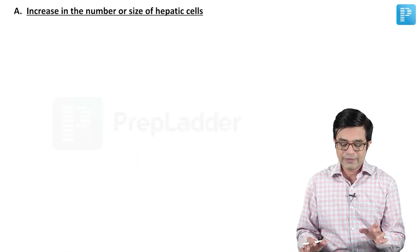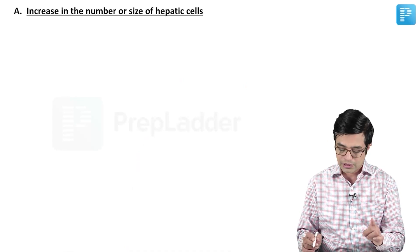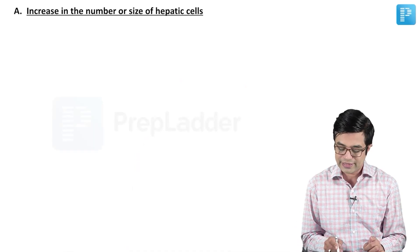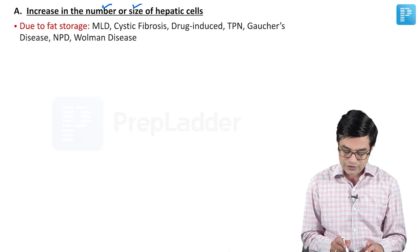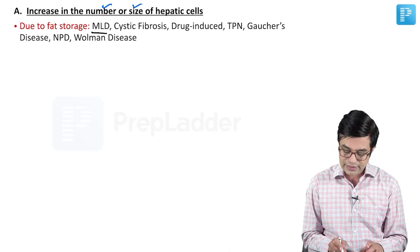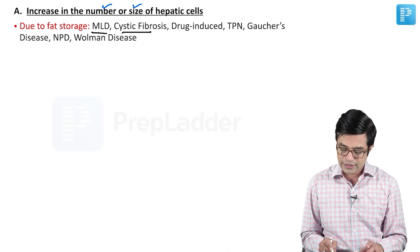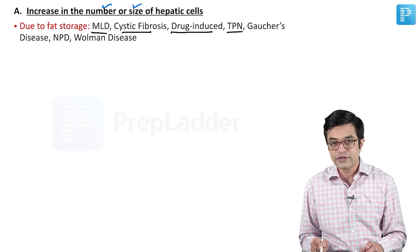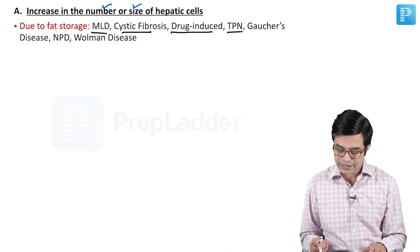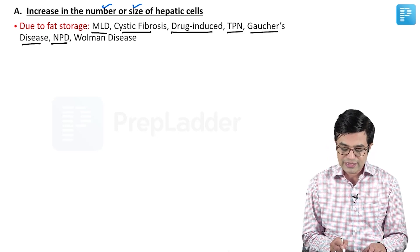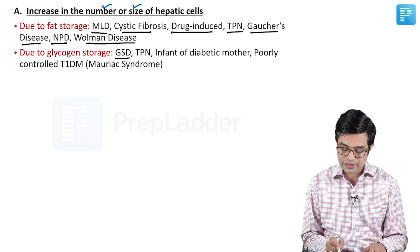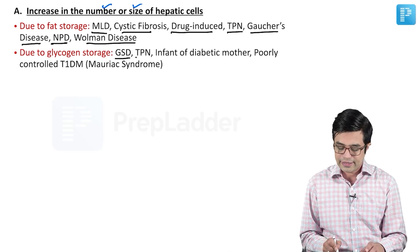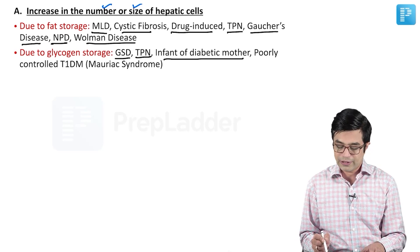First, hepatomegaly can occur due to an increase in the number or size of hepatic cells. It can occur due to fat storage — for example, in metabolic liver disease, cystic fibrosis, drug-induced liver disease, prolonged total parenteral nutrition, Gaucher's disease, Niemann-Pick disease, and Wolman disease. Secondly, it can occur due to glycogen storage disorders, including von Gierke's disease, TPN, and infants of diabetic mothers who can have excess glycogen storage leading to hepatomegaly.